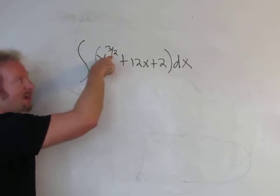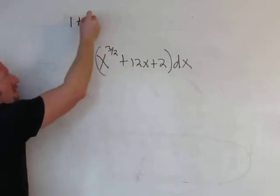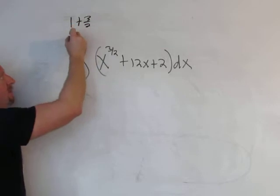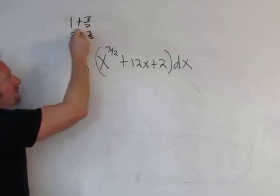So 1 plus 3 halves. You can think of 1 as 2 halves, and so you get 5 halves.